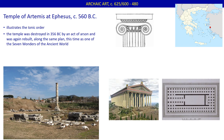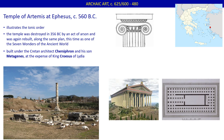The temple was reputedly the first built in marble. Marble can be found throughout the world, but it is particularly abundant around the Aegean. The architects for this project appear to have been the Cretan Chersiphron and his son Metagenes, at the expense of King Croesus of Lydia, who had just seized these Ionian Greek territories. You know the king's name from the expression 'rich as Croesus.'